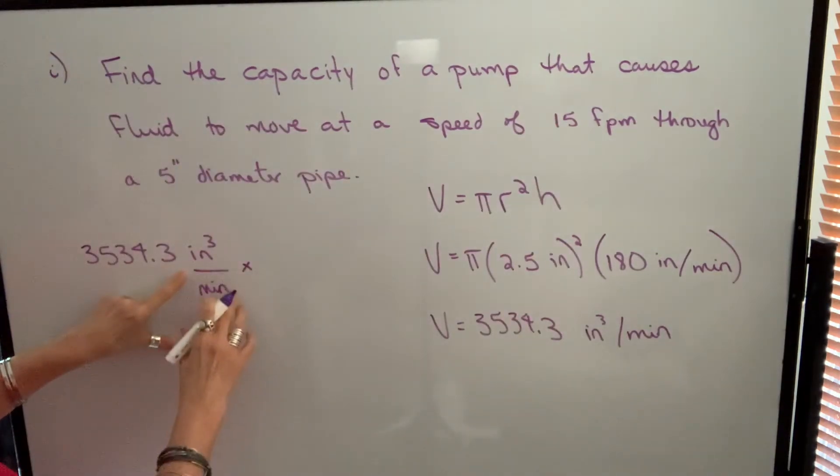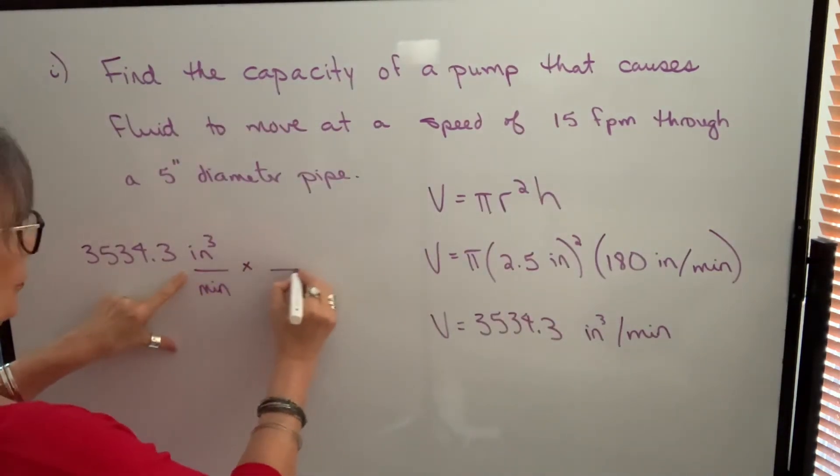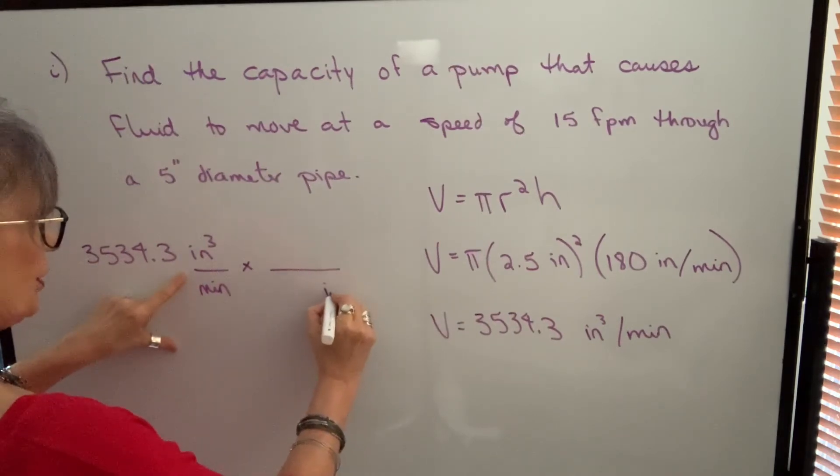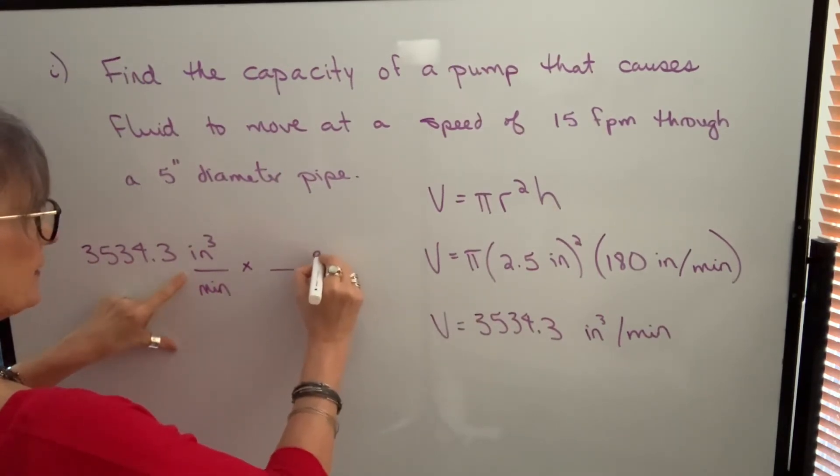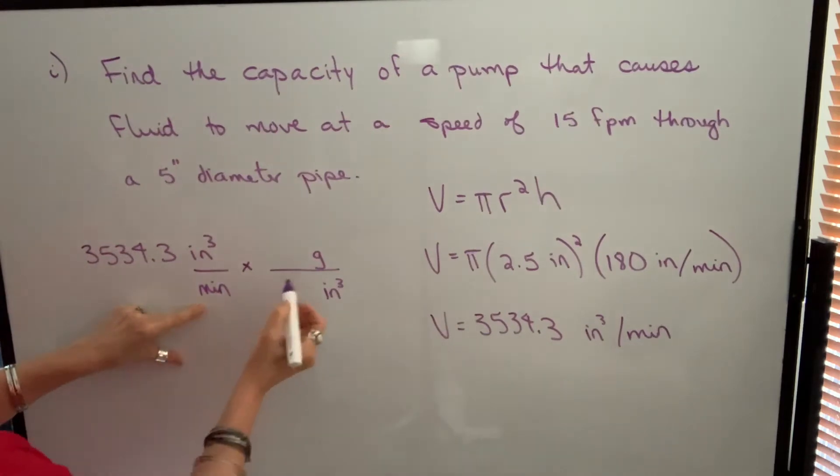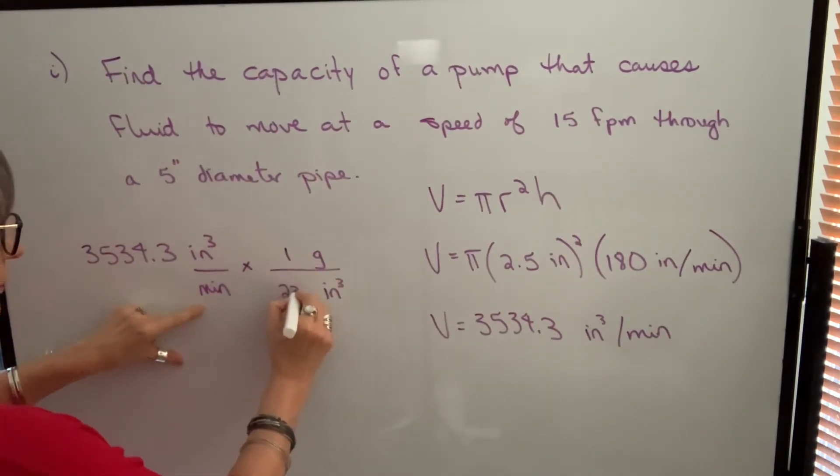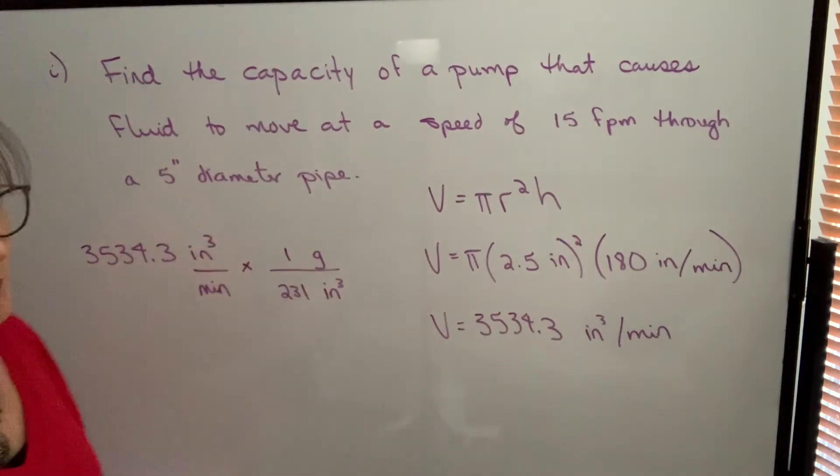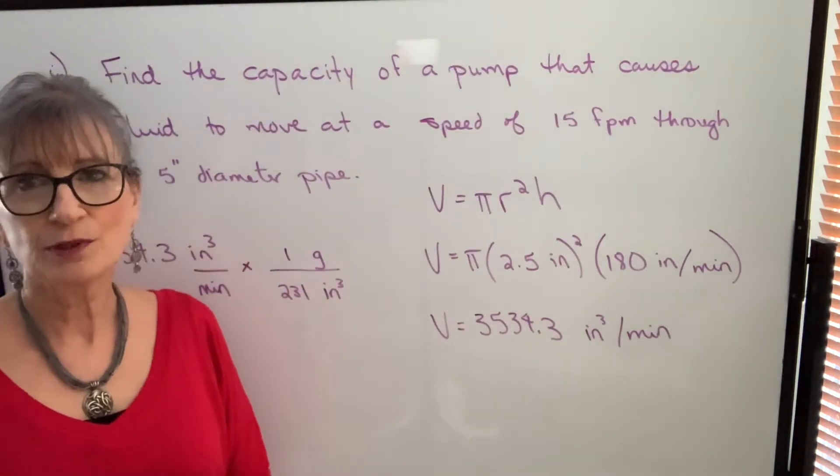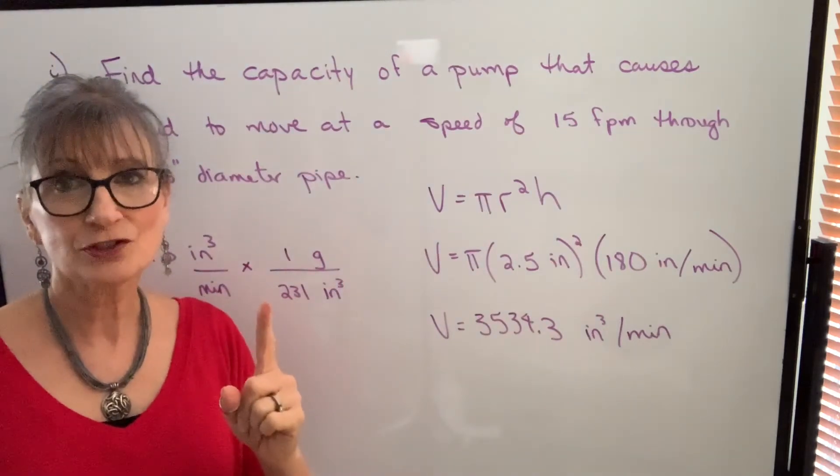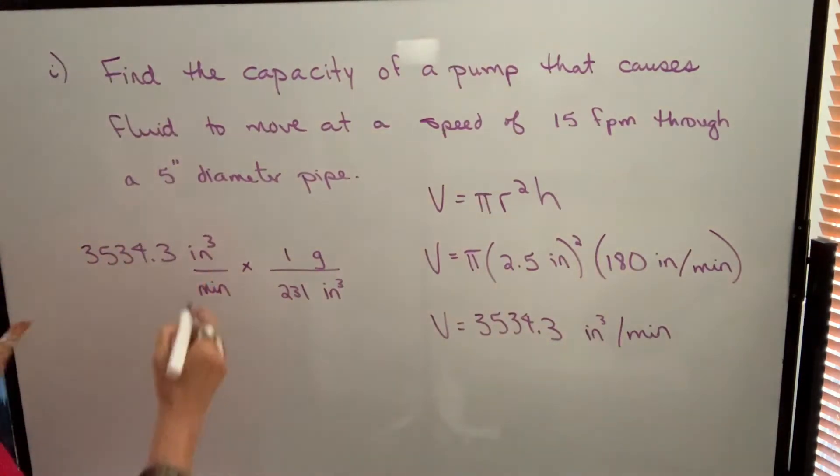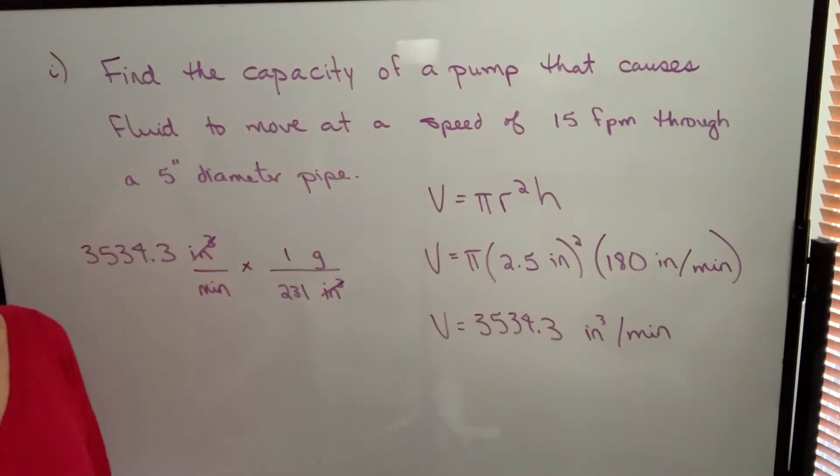You could simply divide by 231 or you could use a process called dimensional analysis. The way that we use dimensional analysis is we deal with our units, our dimensions. So I want to change from cubic inches to gallons. I want to keep the per minute. So I need to know what is equivalent here. I know that one gallon is 231 cubic inches. So because those are equal, I'm not changing the value. I'm multiplying by a value of one, which doesn't change the value. And this allows me to cancel the cubic inches and replace with gallons per minute. So my result will be 15.3 gallons per minute.